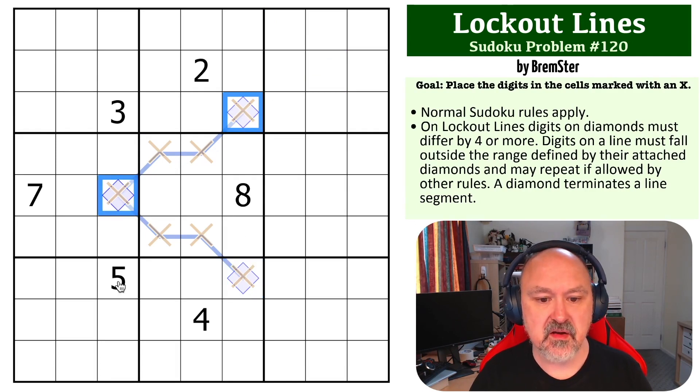So for example, this is a line to there, and this is a line to there. This is not one continuous line. So the diamond terminates the line segments. So that's the way lockout lines work.